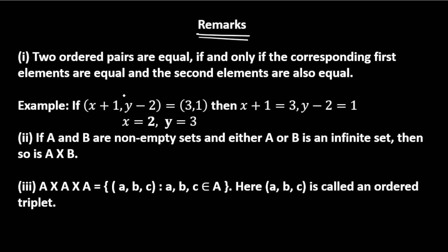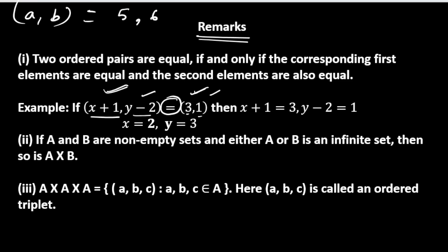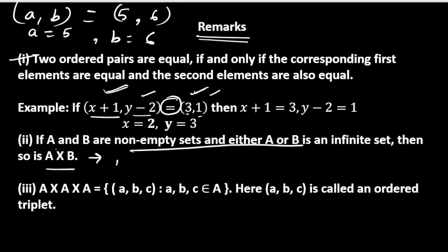Next, a few important remarks. Two ordered pairs are equal if and only if the corresponding first elements are equal and the second elements are also equal. For example, if (x+1, y−2) = (3, 1), then x+1 = 3 and y−2 = 1. So if (a,b) = (5,6), it means a = 5 and b = 6. Second remark: if A and B are non-empty sets and either A or B is an infinite set, then A cross B will also be an infinite set.